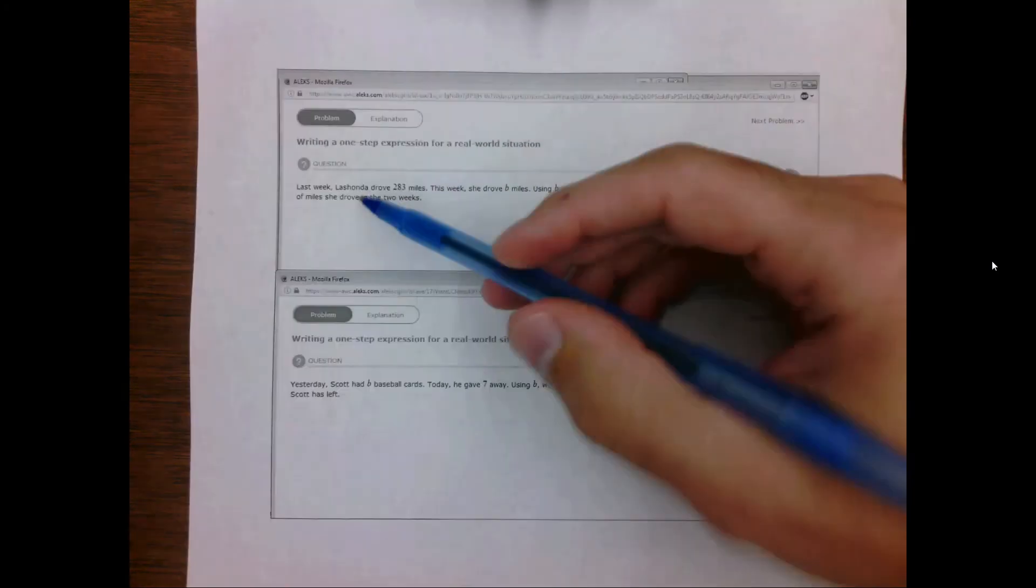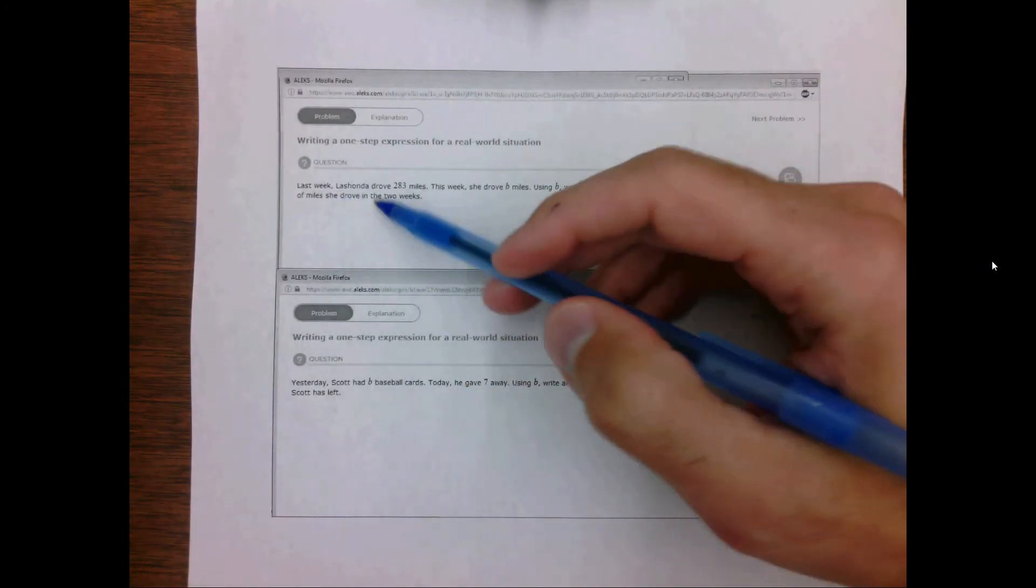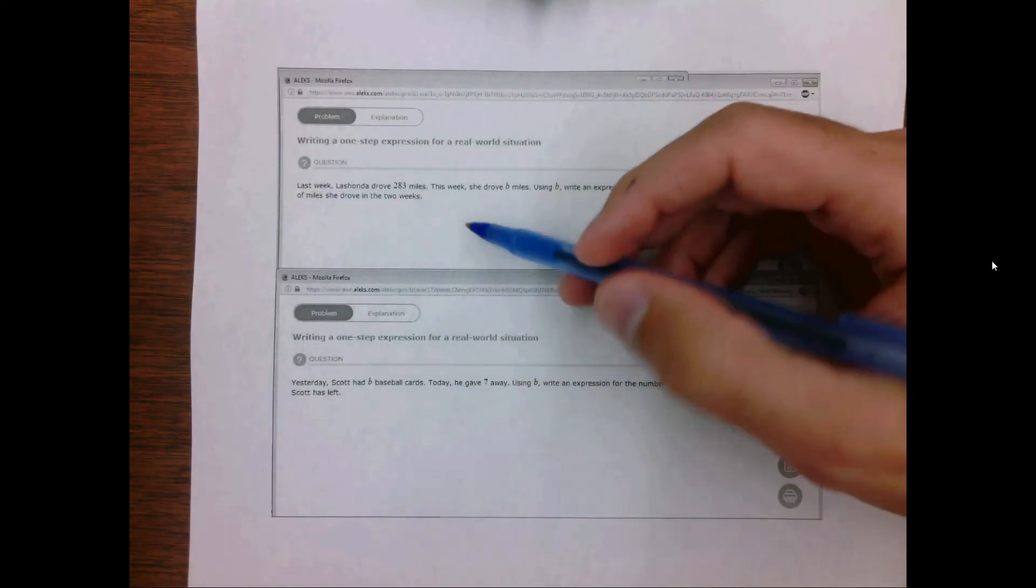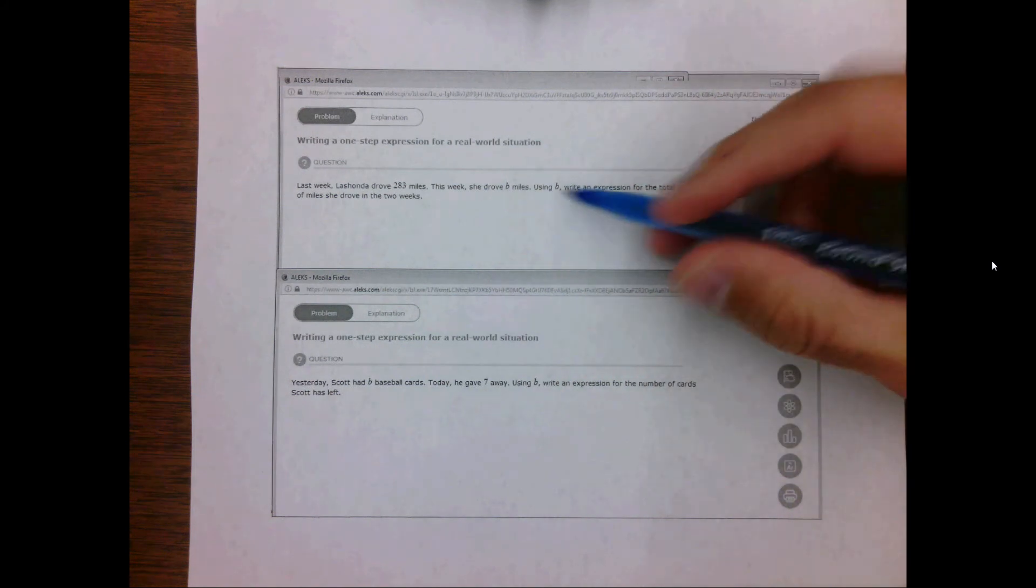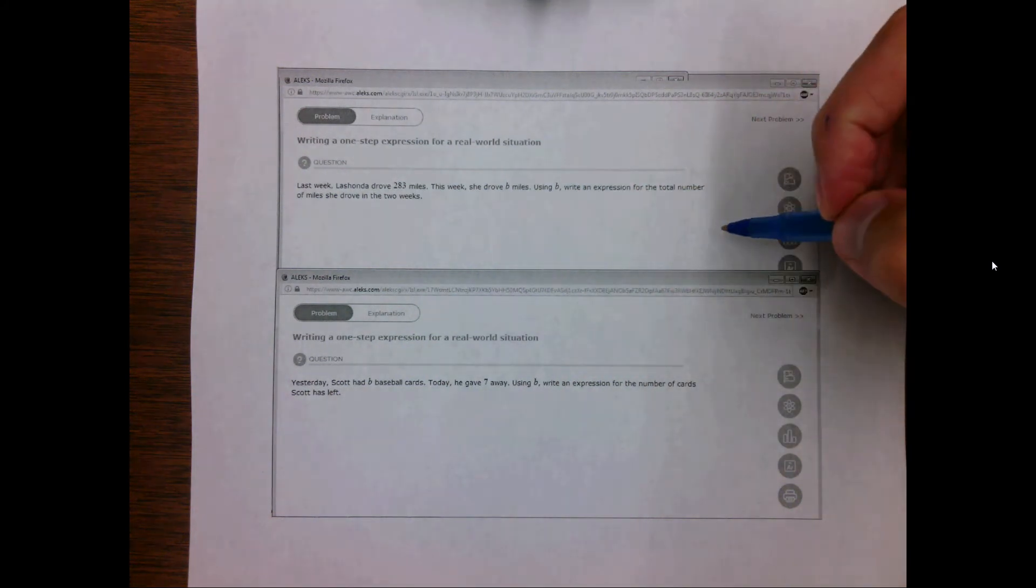So let's look at the two examples. The first one says, last week LaShonda drove 283 miles. This week she drove B miles. Using B, write an expression for the total number of miles she drove in the two weeks.